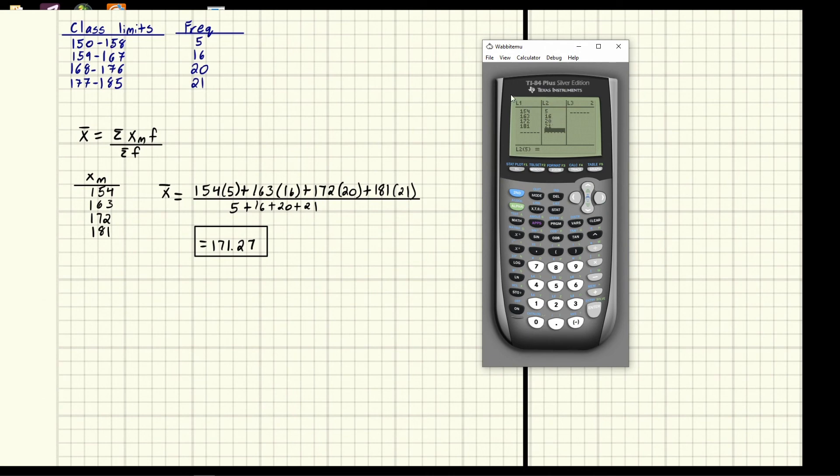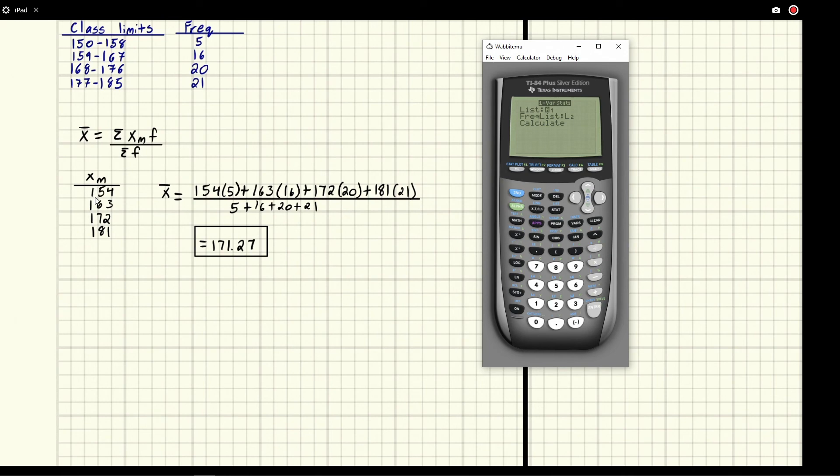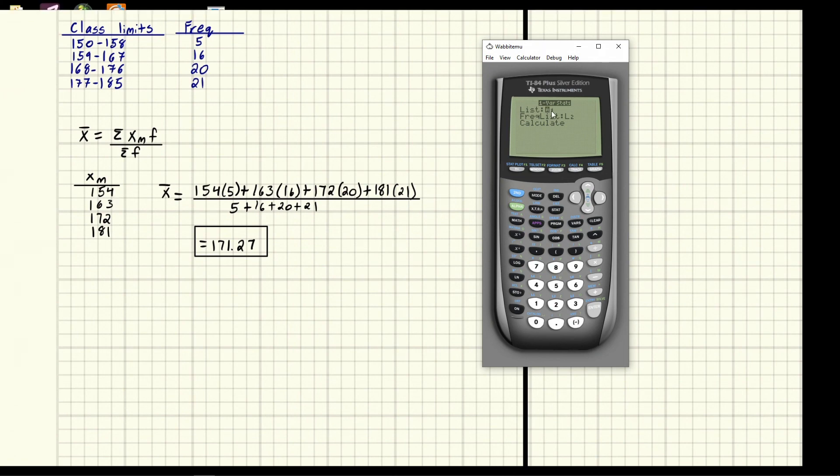So now that we have our lists keep in mind list one's midpoints list two is frequencies. We're going to go to stat and to calculate. And then in list one well these are the numbers that we're using. These are the midpoints. The numbers that we're using are these numbers. I know we're using these ones but these numbers are like the number of these numbers. So we're kind of using these differently than these ones which is again is clearer in that other video. It's just kind of a lengthy explanation. So this is going to be our list one.